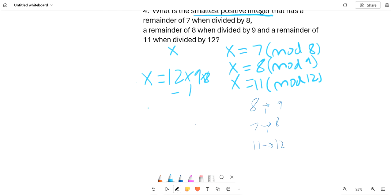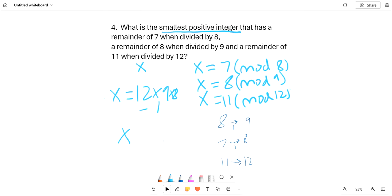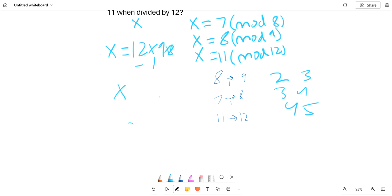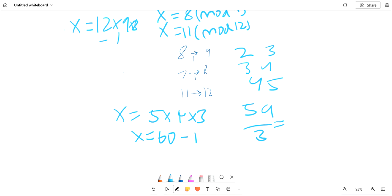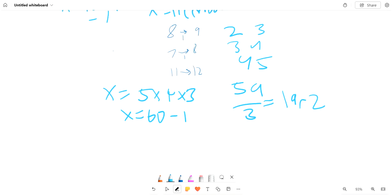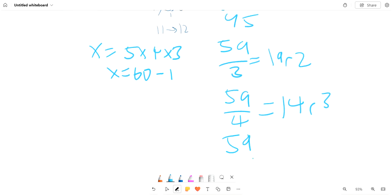For example, let's say that x was the same thing, but with remainder of 2 when divided by 3, 3 when divided by 4, and 4 when divided by 5. So if we have x be equal to 5 times 4 times 3, then we have x equals 60, and minusing 1, we can get that 59 over 3 has a remainder of 2, which is 19 remainder 2. 59 over 4 has 14 remainder 3, and 59 divided by 5 has 11 remainder 4.